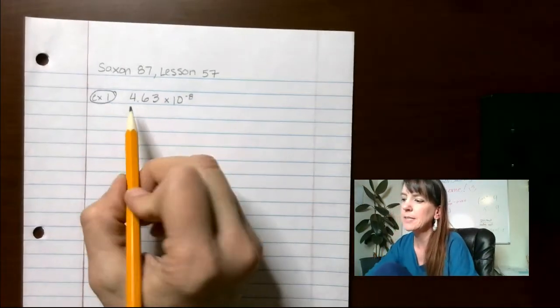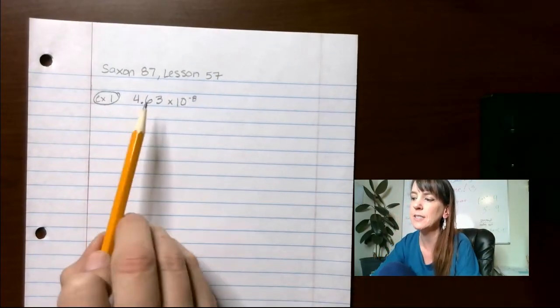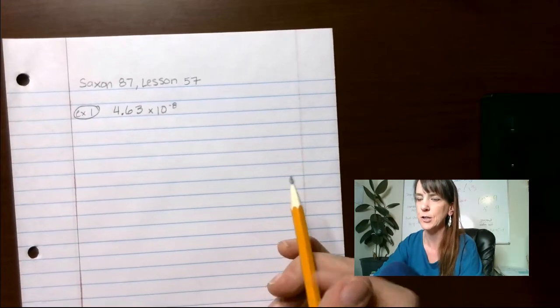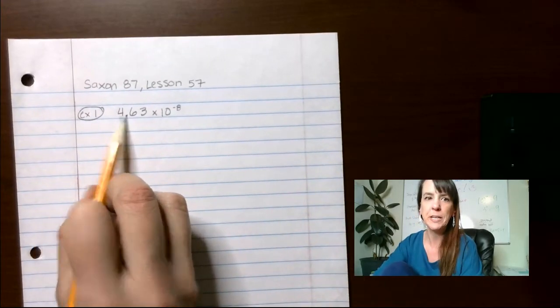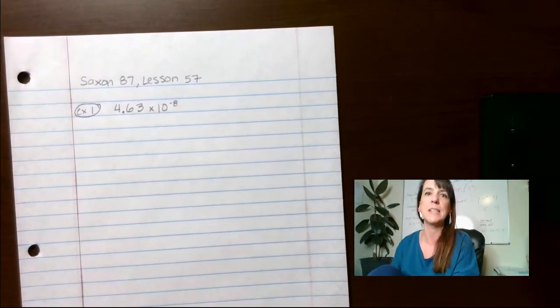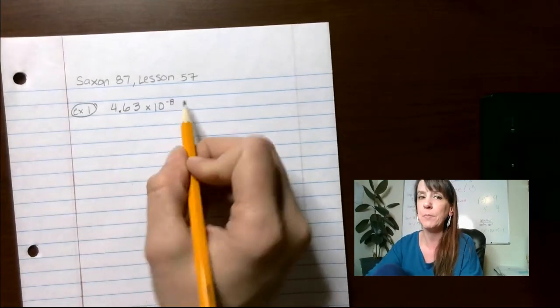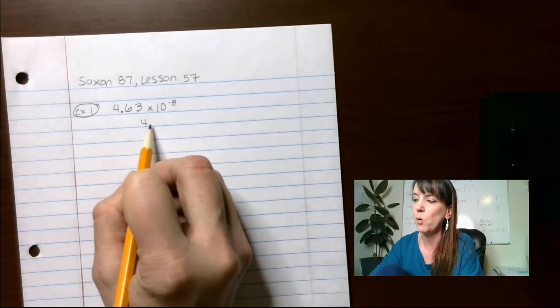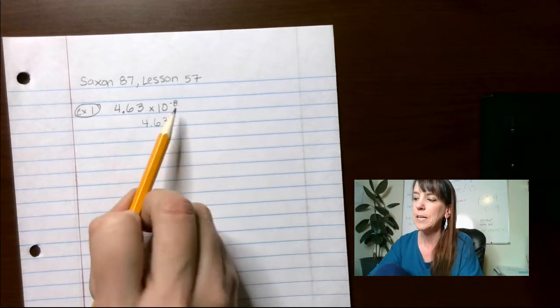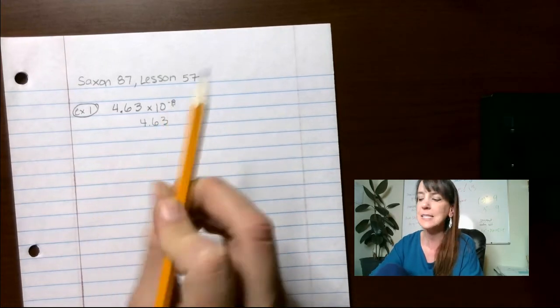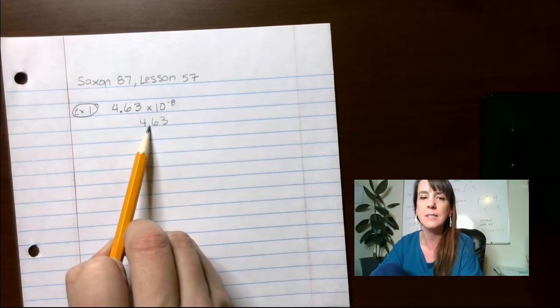So what we're going to do is, like I said, standard notation. This is scientific notation. We need to put it in standard notation. The decimal is shown here. Again, if a number does not show a decimal, it's at the end. But in this case, it is. Now, for me personally, I like to write it right below 4.63 because we're going to move it to the left. This number is smaller. So we need to make this number smaller.